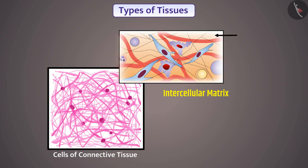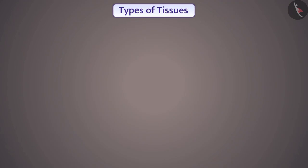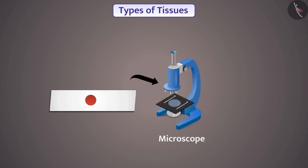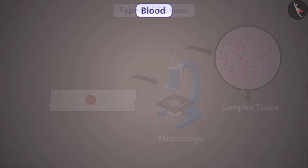This matrix may be fluid, jelly-like, dense, or rigid. The nature of the matrix varies according to the function of the particular connective tissue. Now if we pour a drop of blood on a slide and observe it with the help of a microscope, we will see cells of different types. That's why blood is a type of complex tissue.